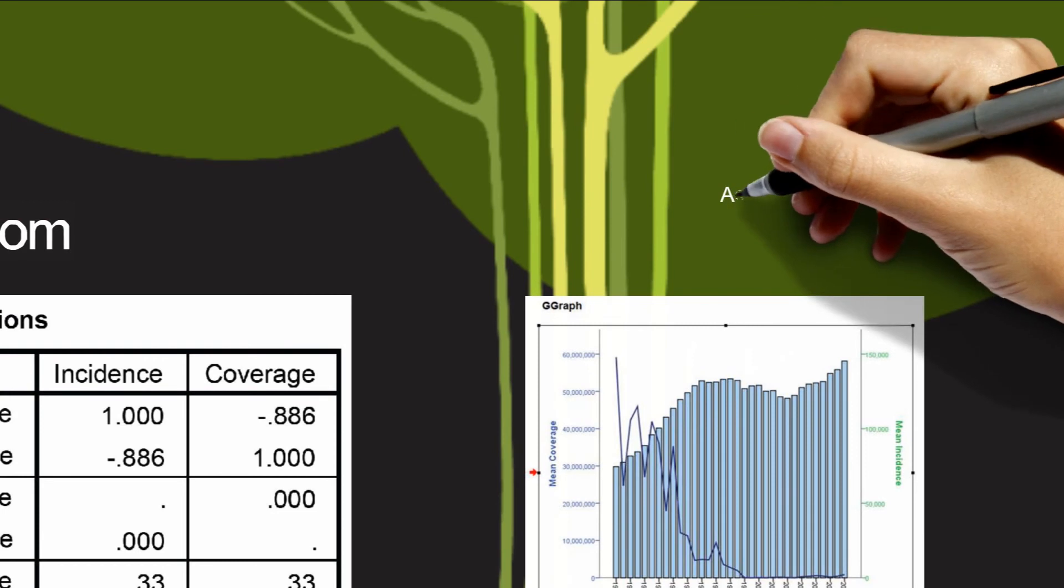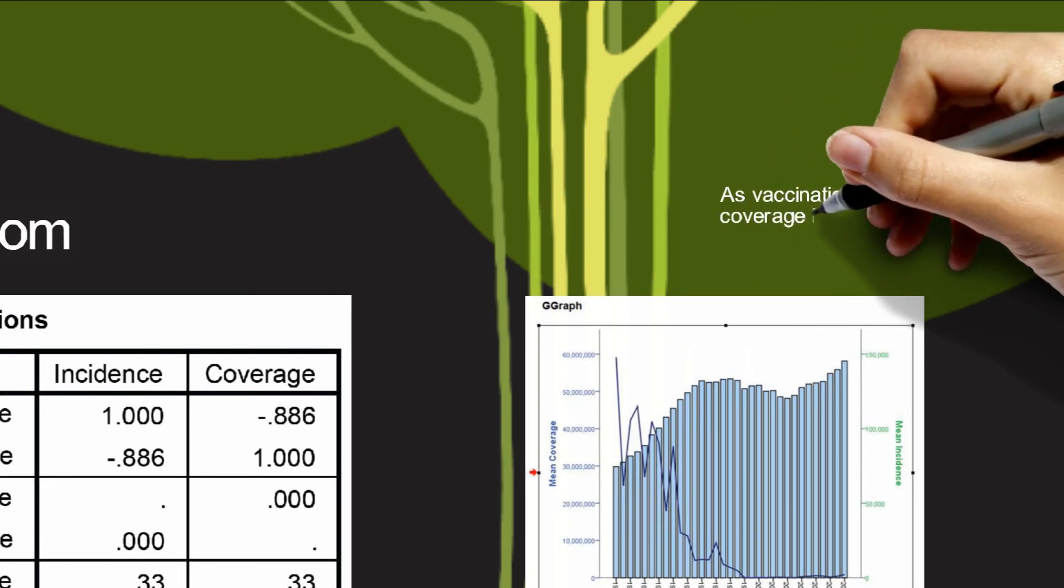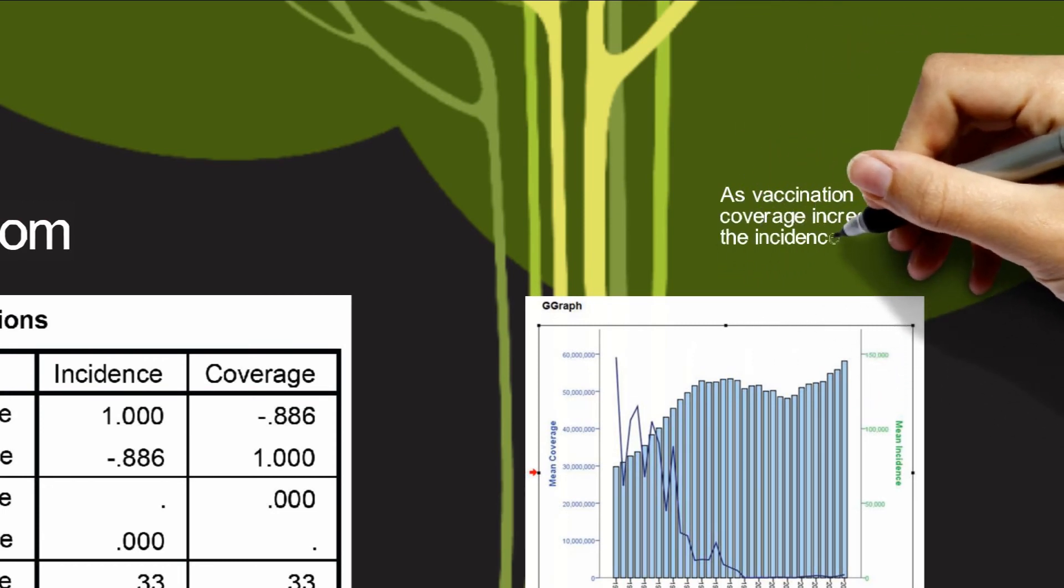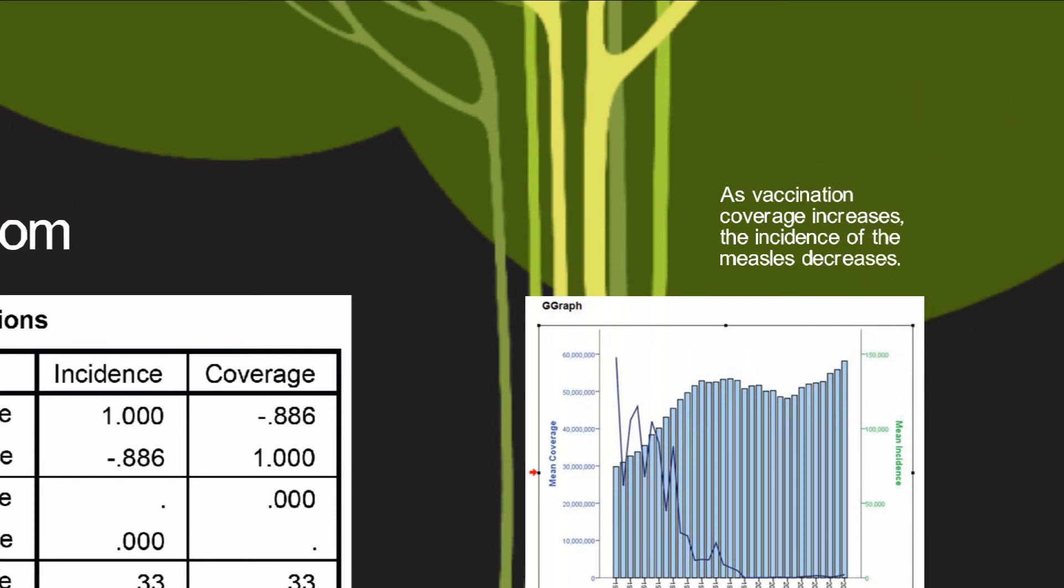Again, this graph gives us a better picture of what is happening. You can see that as vaccination coverage increases, the incidence of measles decreases.